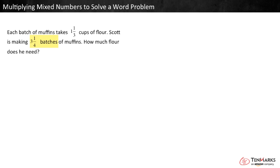Scott needs three and one-fourth groups of one and one-third cups. To find the total amount in a set of same-size groups, we should multiply. So this can be represented by the multiplication expression three and one-fourth times one and one-third.